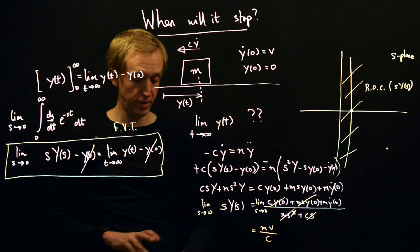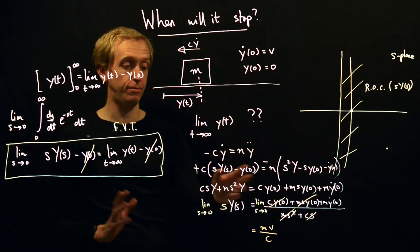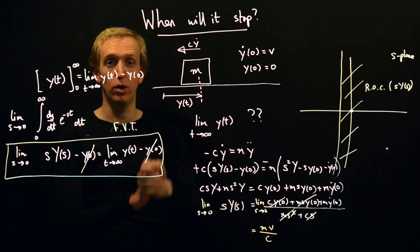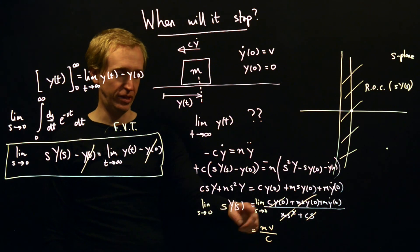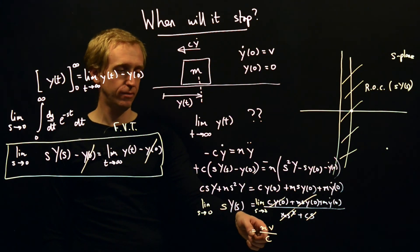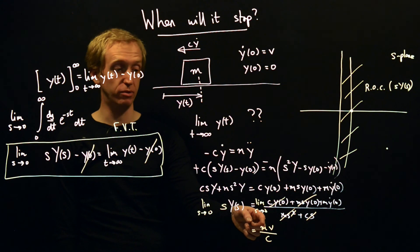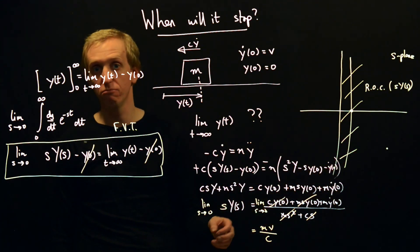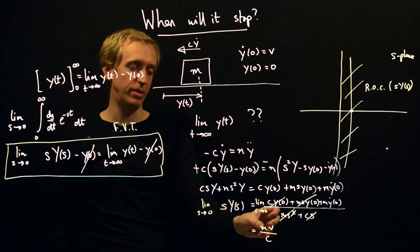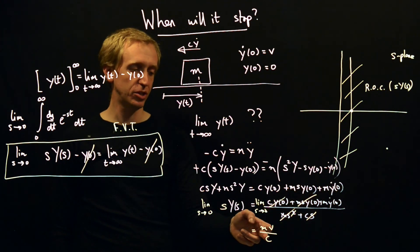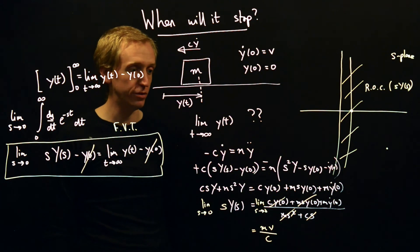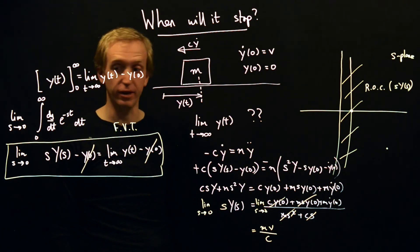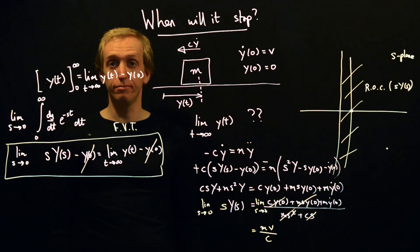And there we go. By applying the final value theorem, we've been able to find the limiting value of y, which tells us when the sliding block will stop. And as we can see, it depends on the mass and the velocity, so things with big mass and high initial velocity will go further, and also if we have a bigger damping coefficient, that will mean it goes less far. So small damping, high velocity, high mass, all mean that the sliding block will go further.